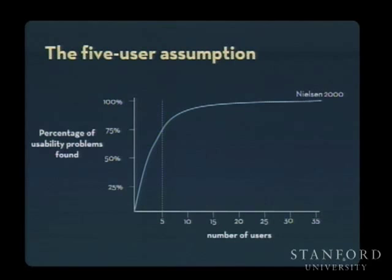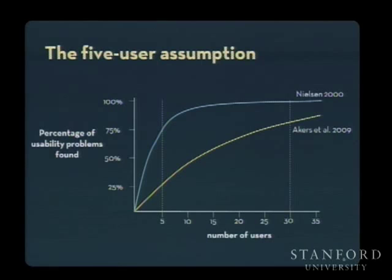But this rule of five turns out not to hold for creation-oriented applications. Here I've shown data from a usability study I ran with Google SketchUp, a 3D modeling application. We ran a usability study with 35 participants, fit the data to the same mathematical model Nielsen used, and found that it takes actually 30 users to find that same 75 percent of the problems. So why does this rule of thumb not hold for creation-oriented applications? I want to suggest two possible reasons.